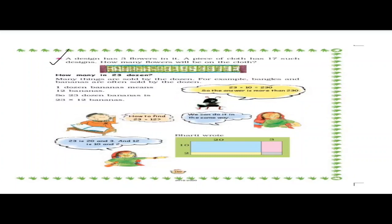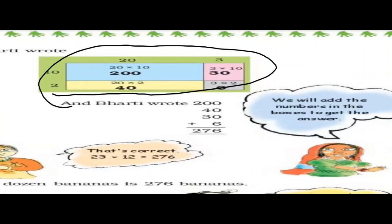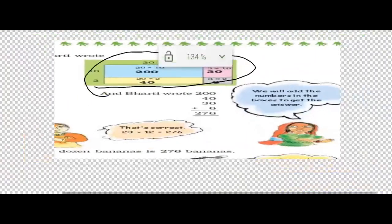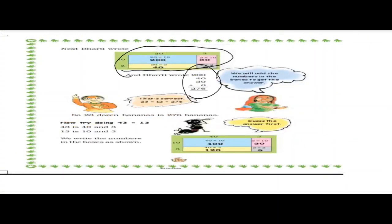How many in 23 dozen? One dozen means 12, so you have to multiply 23 by 12. You divide 23 into 20 and 3, and 12 into 10 and 2. Then multiply: 10 times 20 is 200, 10 times 3 is 30, 2 times 20 is 40, 2 times 3 is 6. Then add all: 200 plus 40 plus 30 plus 6 gives the answer 276.